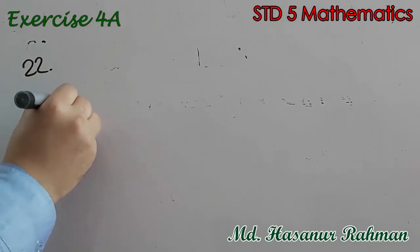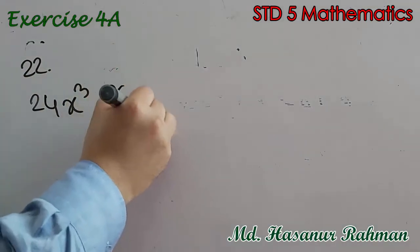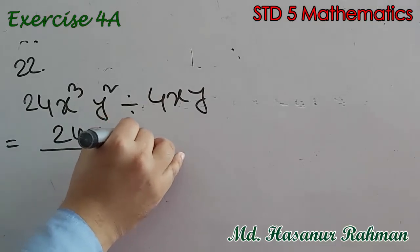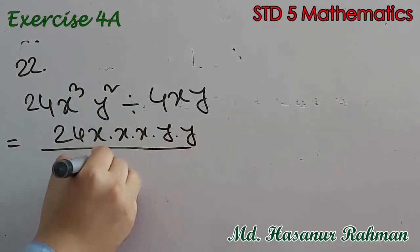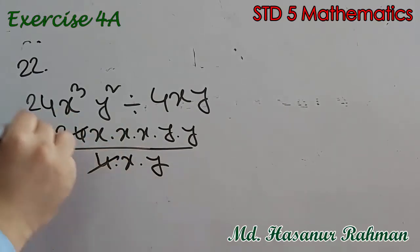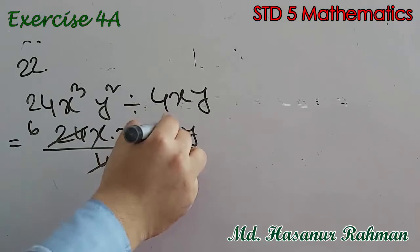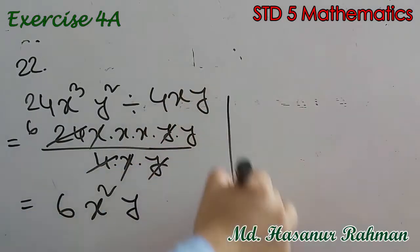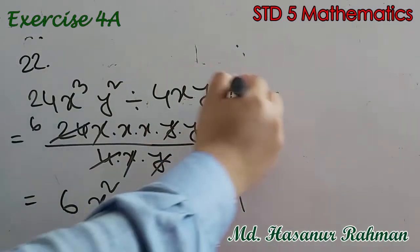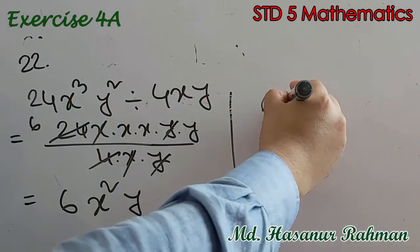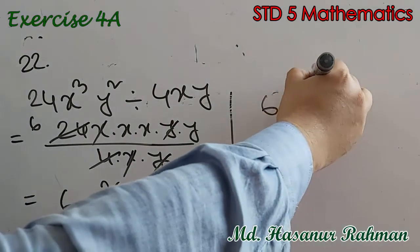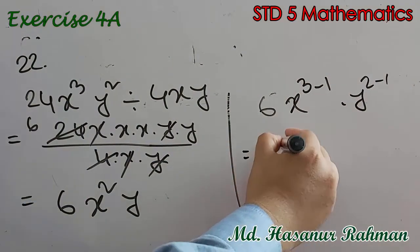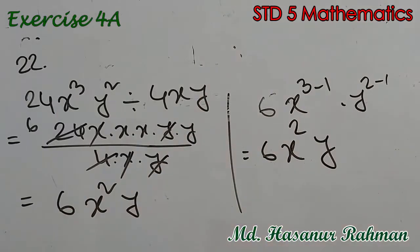Number 22 says 24x cubed y squared divided by 4xy. Expanding: 24 into x into x into x into y into y, divided by 4 into x into y. Now 24 divided by 4 is 6. One x cancels with x, one y cancels with y, leaving x squared and y. So the answer is 6x squared y.